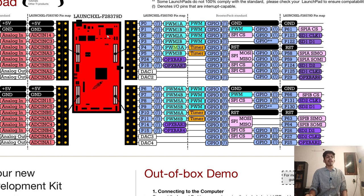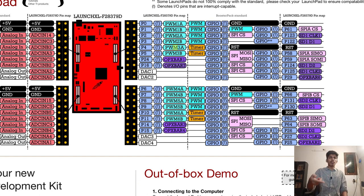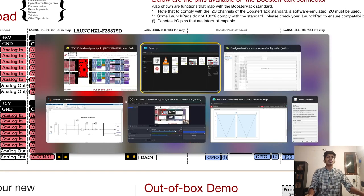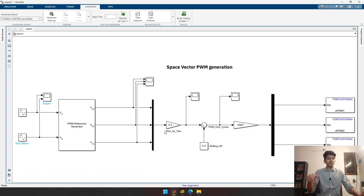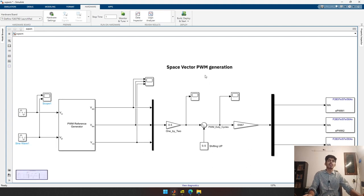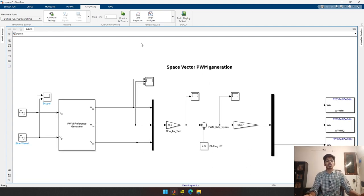You can find the physical pin mapping in the LaunchPad quick start guide on the Texas Instruments website by searching 'F28379D quick start'. The EPWM 1A, 2A, and 3A pins are the leftmost pins 1, 2, and 3. I connected these to RC filters and probed the oscilloscope to view the Space Vector PWM waveforms. If you have any questions please leave them in the comments — thank you very much.